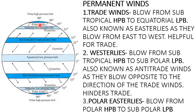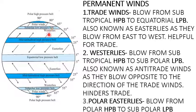Then polar winds, also known as polar easterlies because they blow from the poles and from the eastern direction. They blow from the polar high pressure belt to the subpolar low pressure belt. Easterlies bring rainfall on the eastern margins of the continent, whereas westerlies bring rainfall on the western margins of the continent.